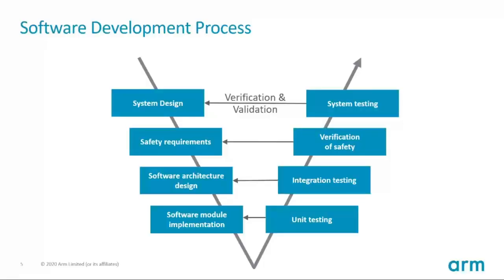This is the well-known V-Model, which is a graphical representation of a system development lifecycle. It describes the various development steps. The requirements on the left side should be verified to ensure that you build the right thing. Validation should also happen directly on the left side while you are creating the requirement specification. This V-Model approach is also supported by various ARM products.